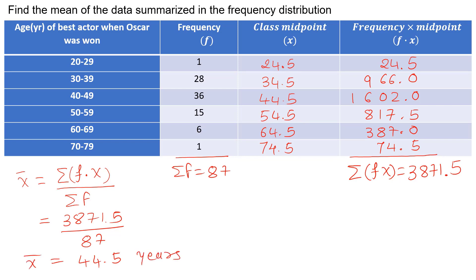Now remember one thing, this formula will give you an approximation. So this result is an approximation. Why? Because it is based on the values of class midpoints instead of the original list of years of age.